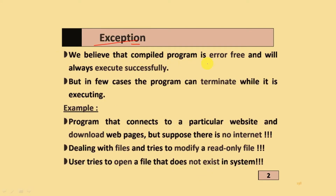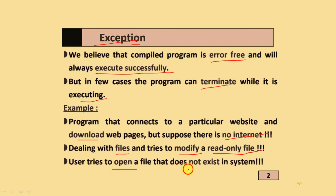We believe that the compiled program is error-free and will always execute successfully. But in a few cases, the program can terminate while it is executing. Some examples: a program that connects to a particular website and downloads web pages, but suppose there is no internet connection. Or dealing with different files and trying to modify a read-only file. Or a user tries to open a file and it does not exist in the system.